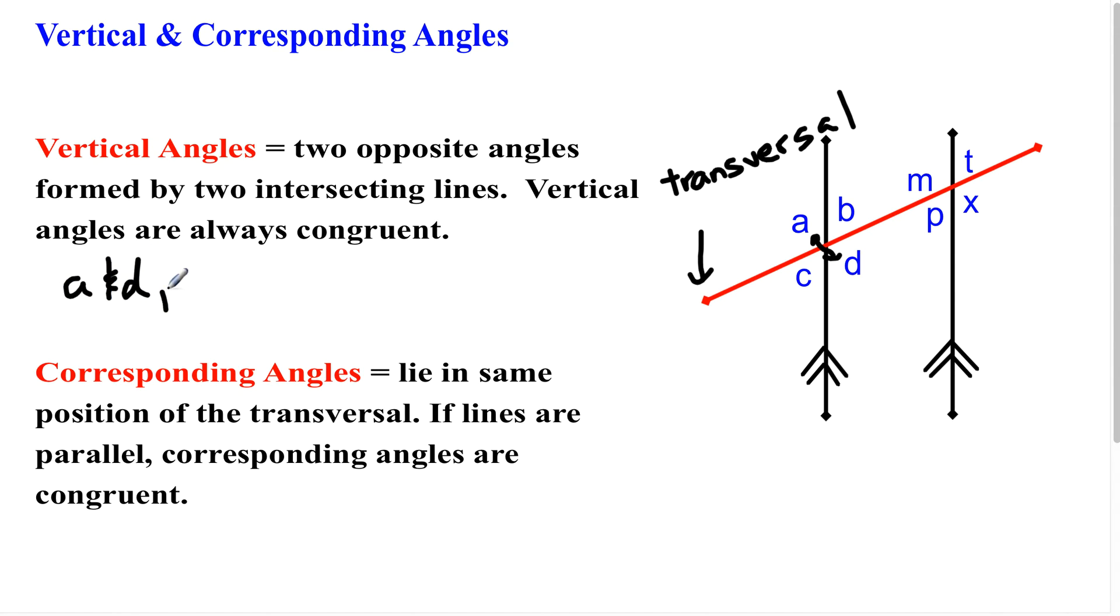As A and D are vertical and therefore equal in measure, B and C would be as well, because they are also on opposite sides here when two lines intersect. So I'm going to go ahead and write B and C.